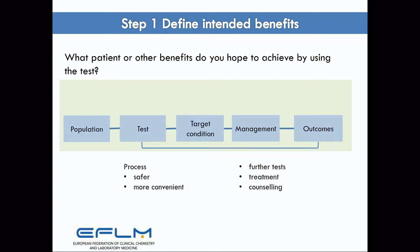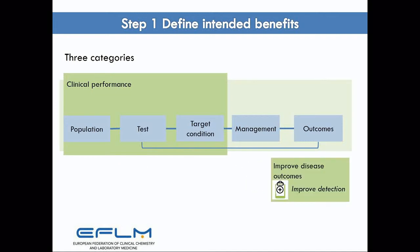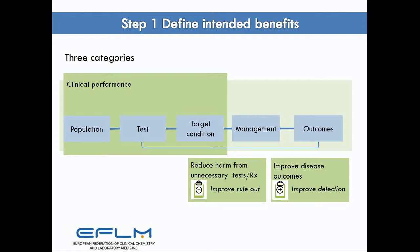For the purpose of defining clinical performance specifications, you can categorise intended benefits into three groups. First, my new test is going to improve disease outcomes — to do that, it has to improve detection. Or it might be that the main reason to introduce the new test is to reduce harm from unnecessary tests and treatment already in the pathway, improving rule-out and avoiding iatrogenic harm. Or it may be that I'm going to introduce this test to provide other benefits — improve the process, reduce the costs — without compromising the rest of the pathway.